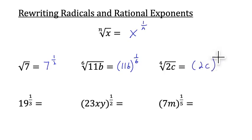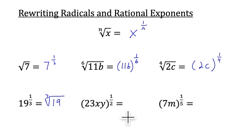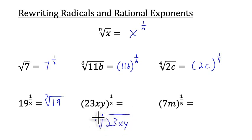And here we have 2c raised to the 1 4th power. Going the other way, 19 to the 1 3rd power can be written as the 3rd root of 19. Notice that 3 is in the denominator. The 1 half power gives the 2nd root, which we also call the square root, so we put 23xy inside our square root symbol — we don't need to put the 2 there. And 7m to the 1 5th power equals the 5th root of 7m.